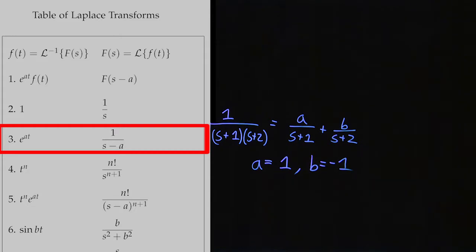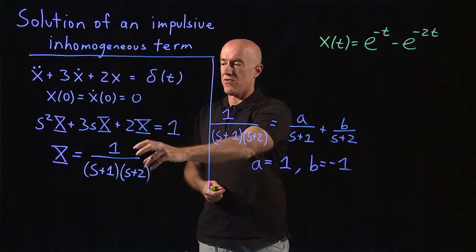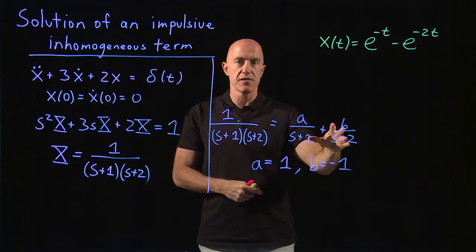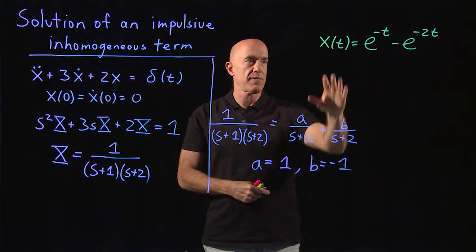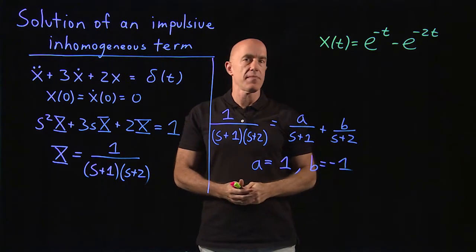And that term gets multiplied by minus 1, because b is equal to minus 1. So we've taken the Laplace transform of capital X, using the partial fraction expansion. And we get e to the minus t minus e to the minus 2t.